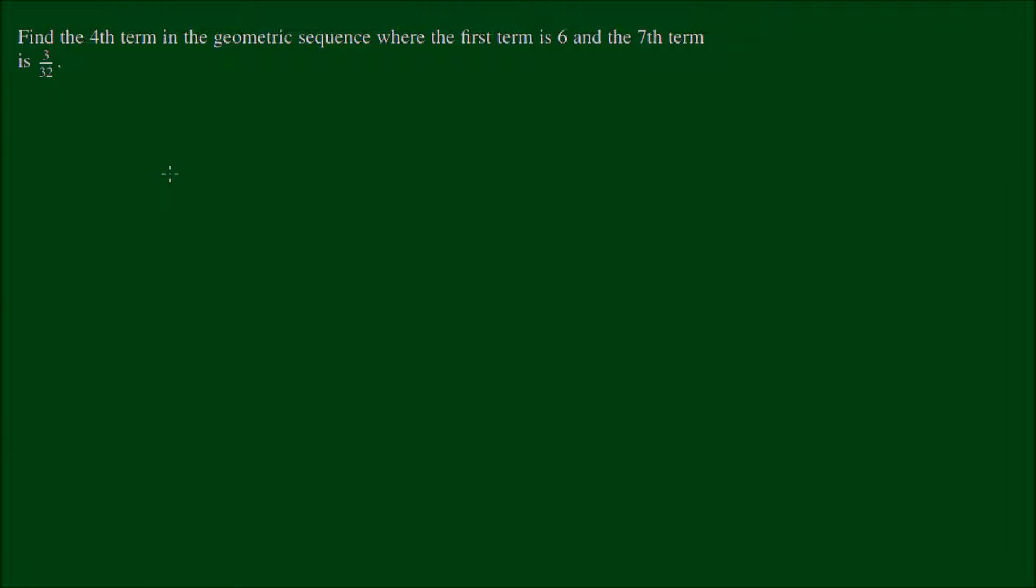Find the fourth term in the geometric sequence, where the first term is 6, and the seventh term is 3 on 32.